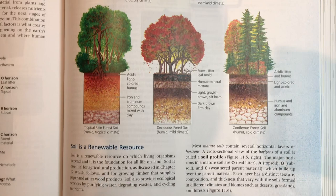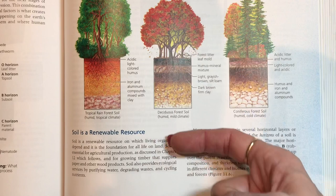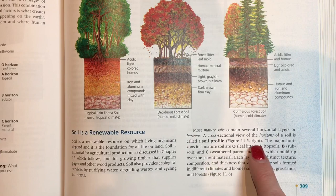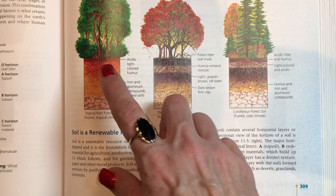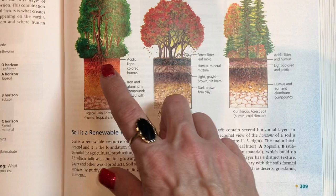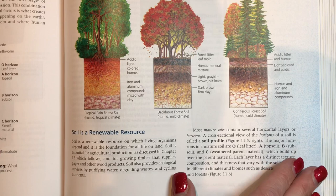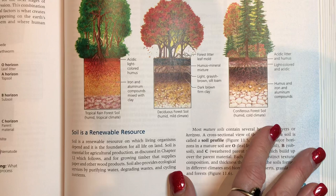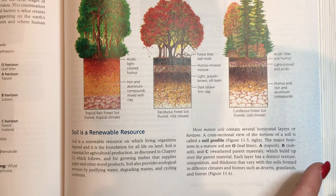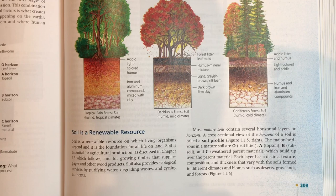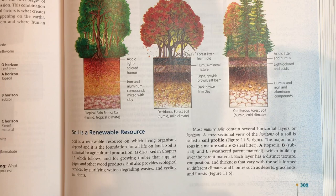Identify the major soil horizons. From top to bottom they go: O, A, B, C. O is the leaf litter. A is the most important layer — that is where all the nutrition is and where most root systems are. B is subsoil that is starting to develop. C is the parent material, essentially the bedrock at the bottom. The fertile uppermost layer is called topsoil, which is layer A. Layer O, the humus, is not the most fertile layer because it hasn't decomposed enough to release its nutrients into the soil.